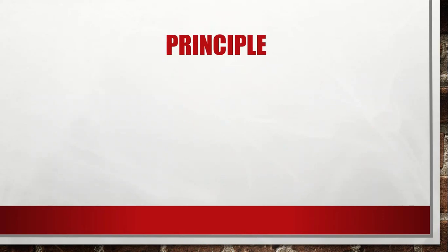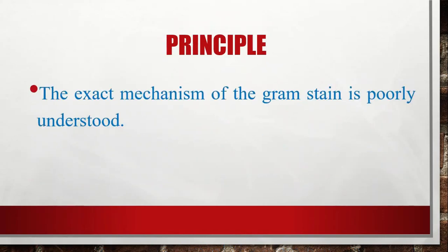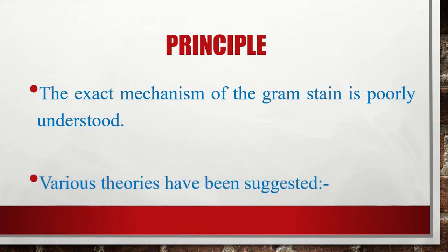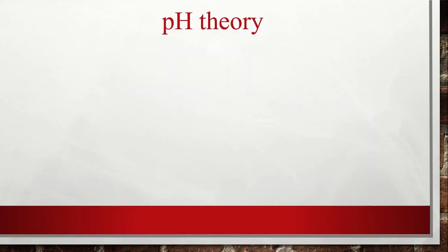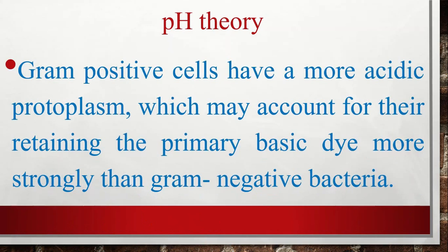When we discuss about the principle of gram stain, the exact mechanism of gram stain is poorly understood — there is no exact mechanism. But several theories have been given to understand the principle of gram stain. I would like to explain two important theories which are widely used. Number one is the PS theory. In PS theory, gram positive cells have a more acidic protoplasm, which may account for their retaining the primary basic dye more strongly than gram negative bacteria.